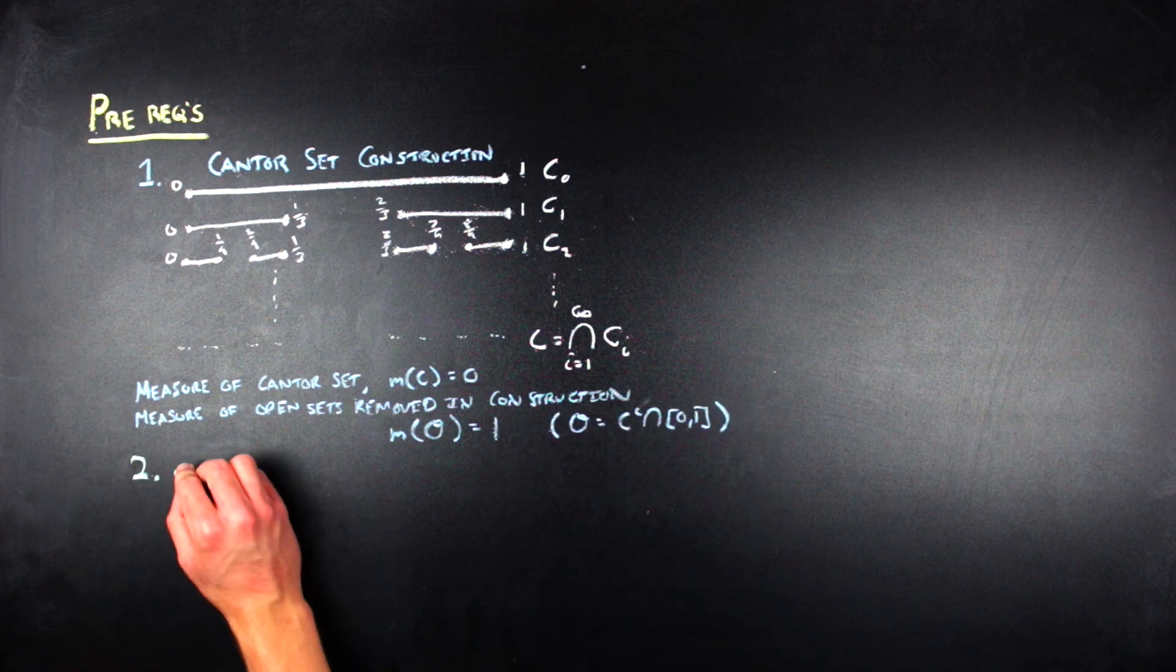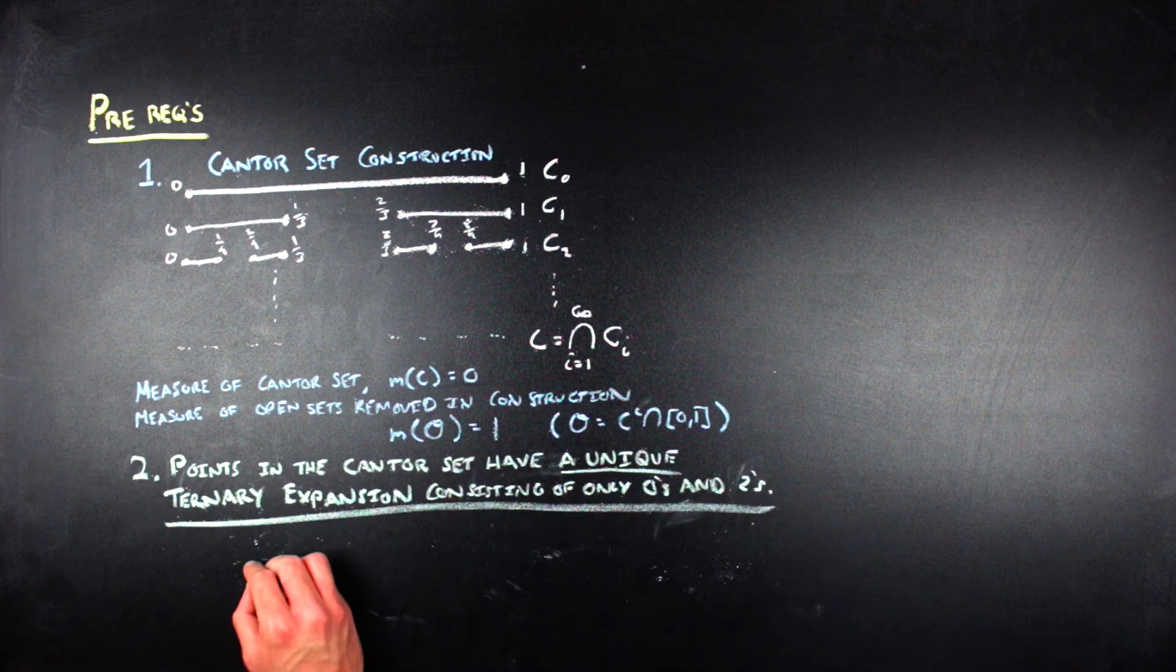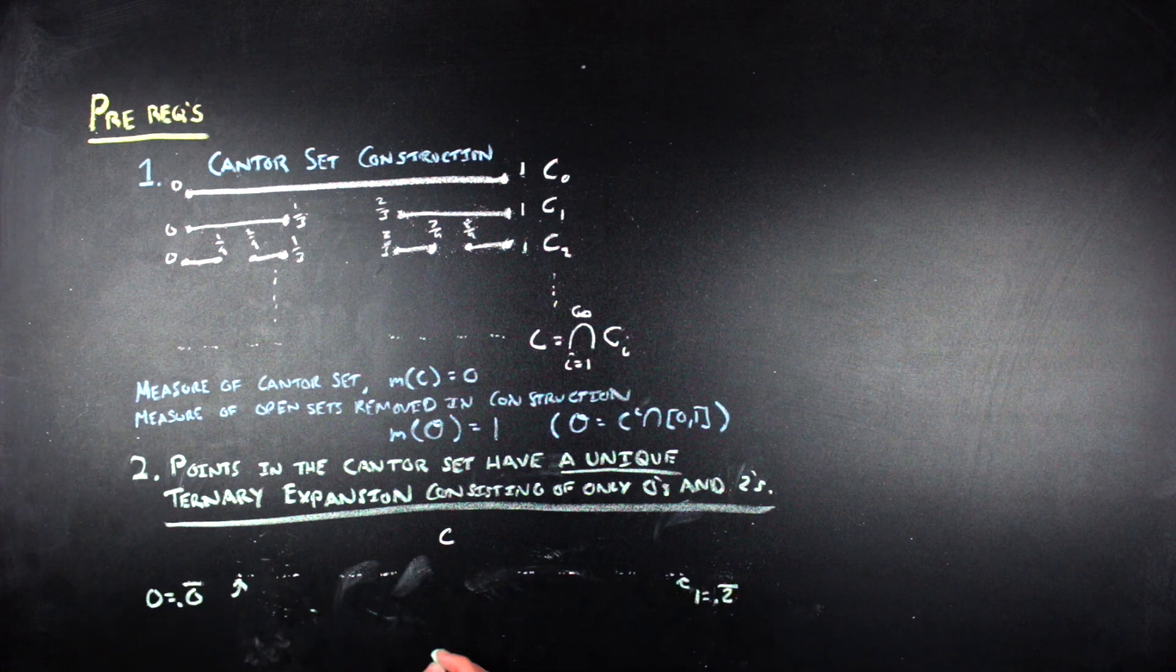The next thing we should keep in mind is that a point is in the Cantor set if it has a unique ternary expansion consisting of only zeros and twos. This one I haven't talked about specifically, but the main idea comes up in this video where I took a fractal geometry perspective on the 0.9 repeating equals 1 problem.